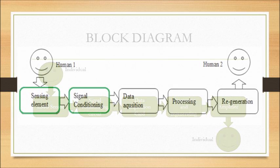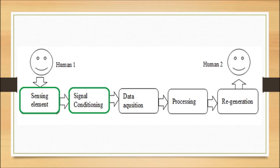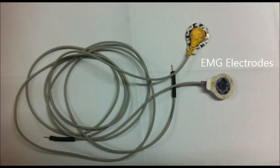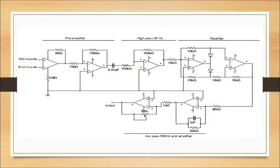The first stage is the signal conditioning stage. The signal is acquired by a passive electrode. Then the weak acquired signal is amplified using an instrumentation amplifier.